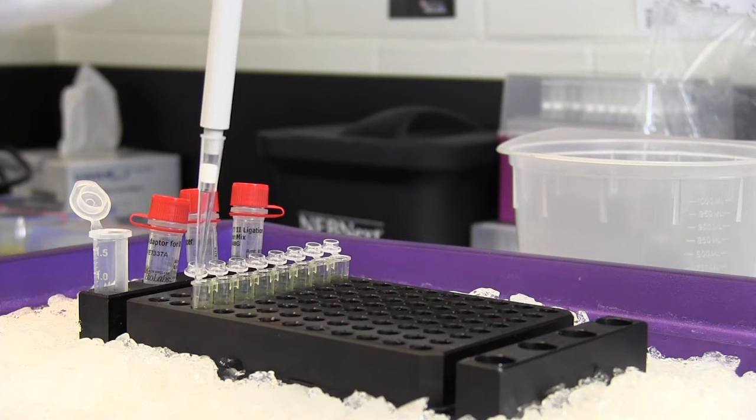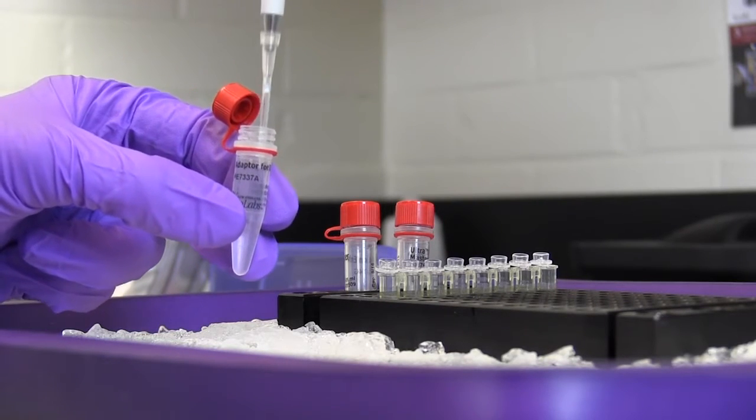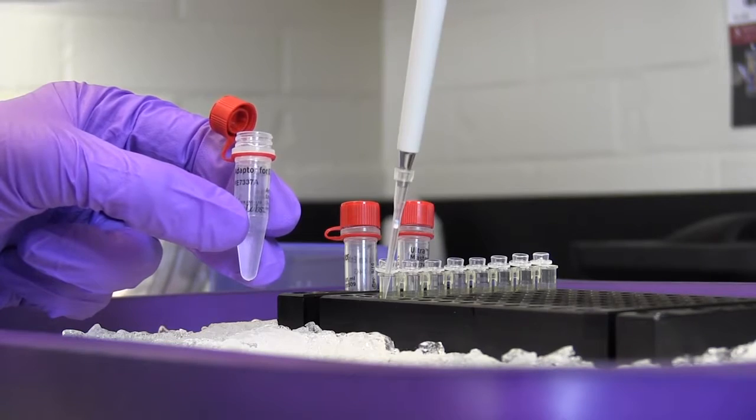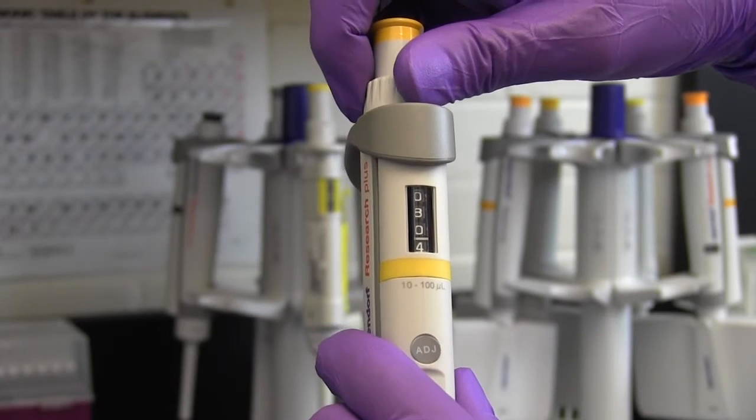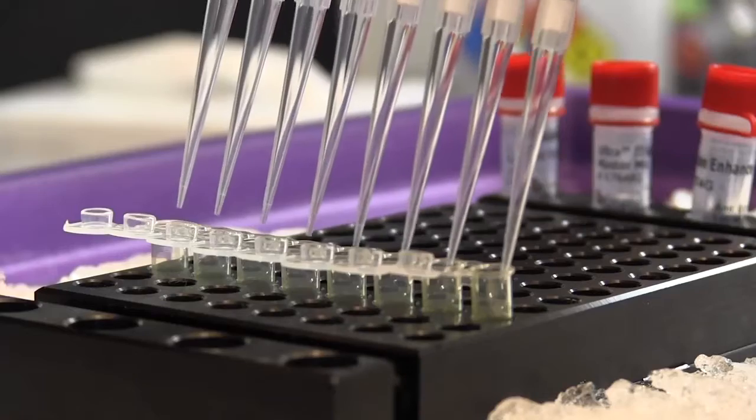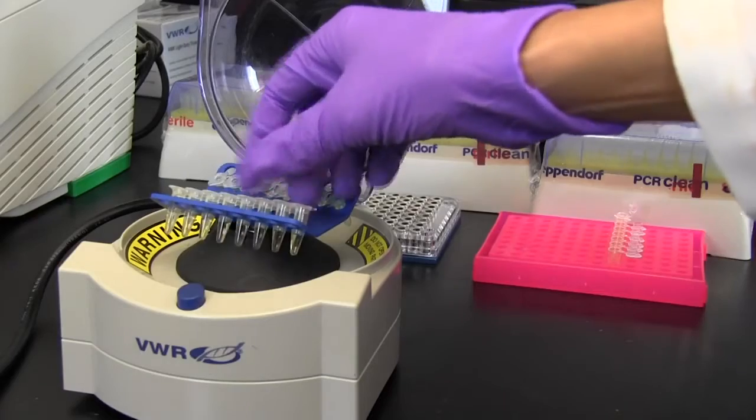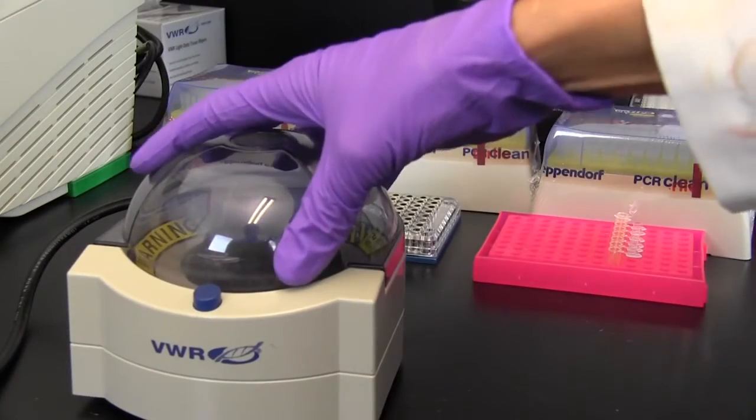Add the Ultra 2 ligation master mix, ligation enhancer, and adapter to the N-Prep reaction and mix well. We recommend setting a 100 or 200 microliter pipette to 80 microliters and then pipetting up and down at least 10 times. A quick spin will collect all liquid from the sides of the tube.